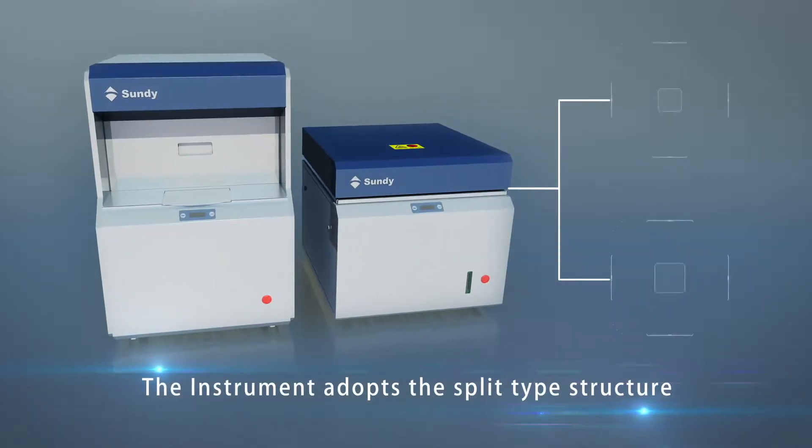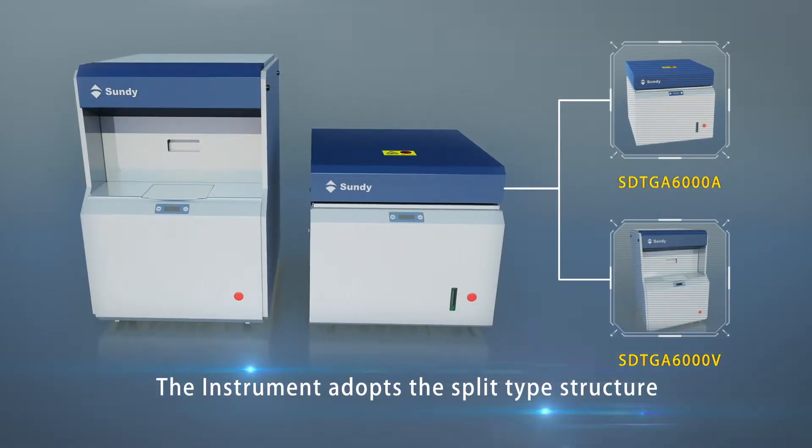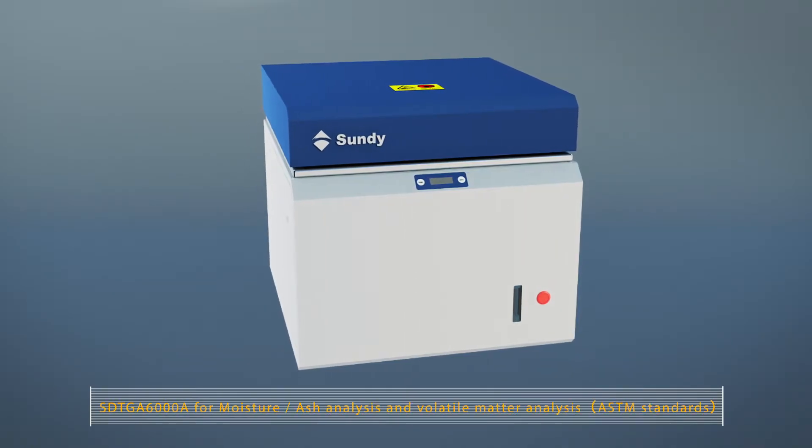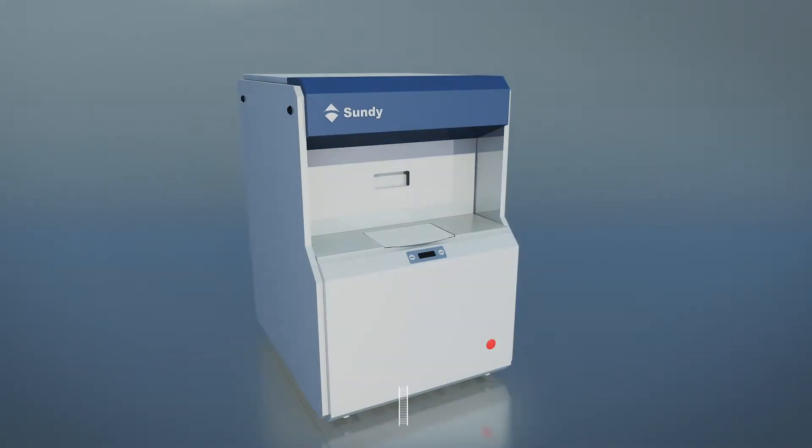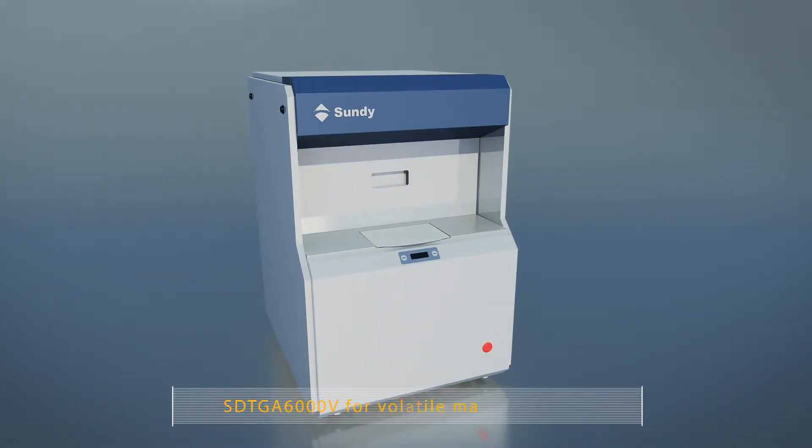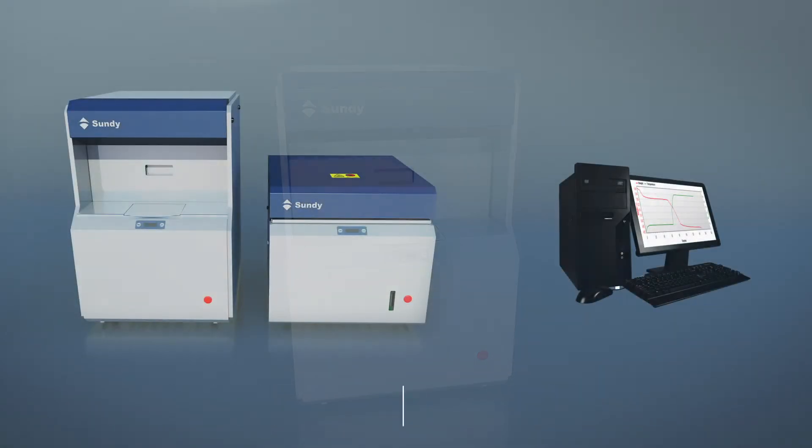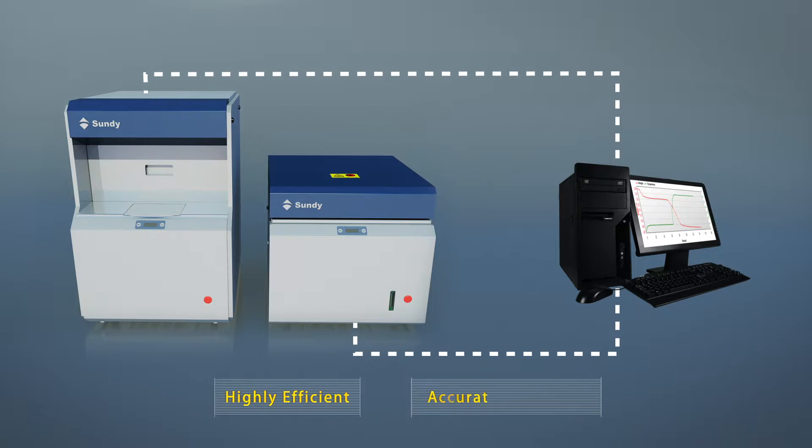The instrument adopts a split-type structure. It consists of two parts: SDTGA 6000A for Moisture and Ash Analysis, and SDTGA 6000V for Volatile Matter Analysis. With independent control, it can do the whole test simultaneously or independently, can be purchased separately, making it highly efficient, accurate, and stable.